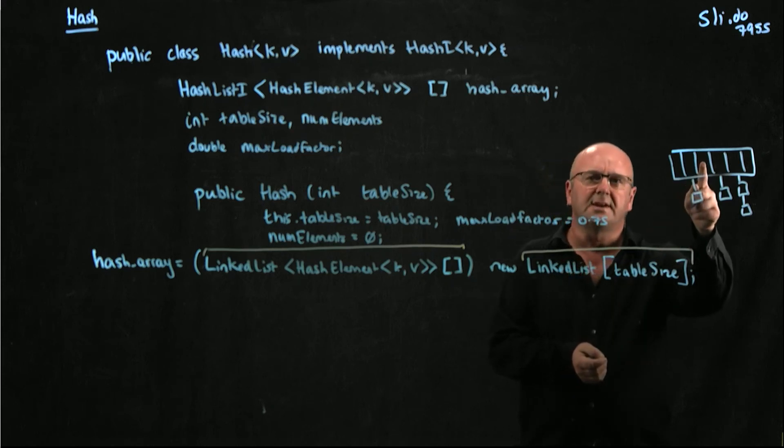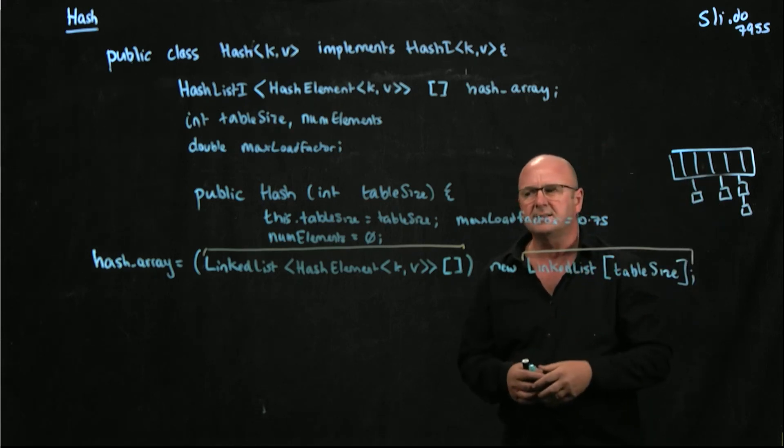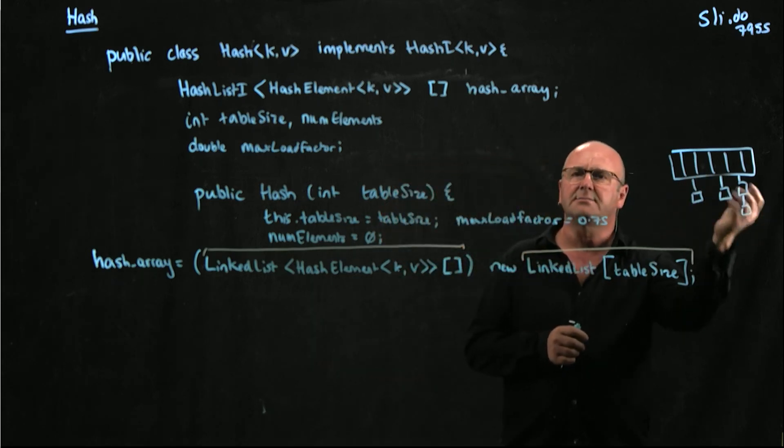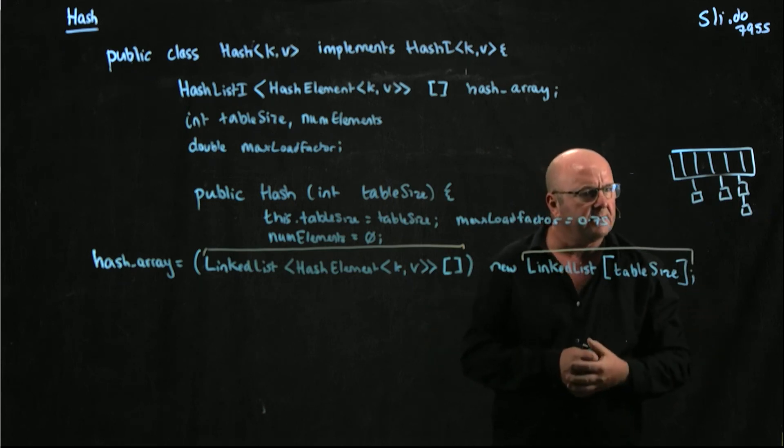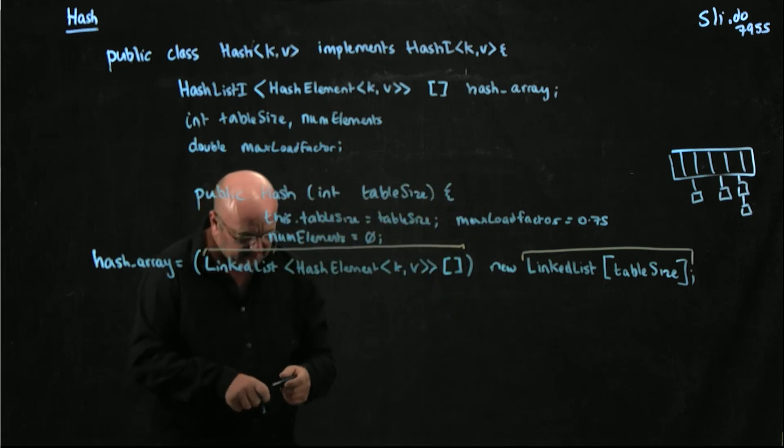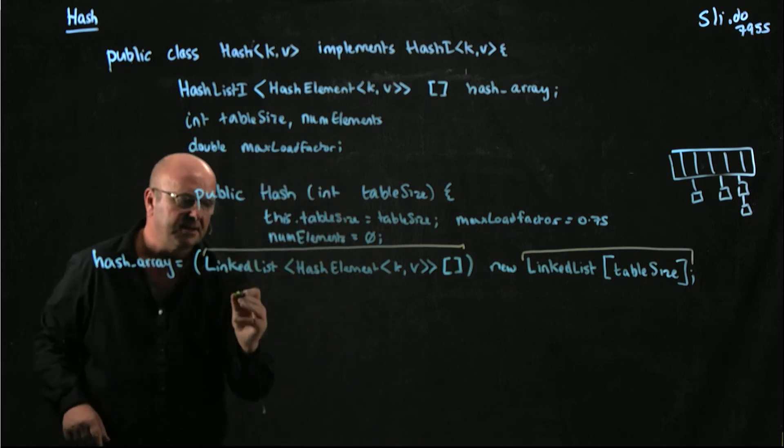So instead of doing it every time we add, remove, contains, find, all of those things, let's just do it right now at the constructor. And then our linked list will take care of returning null already, whether if there's nothing there. So we're just going to write a simple line that's going to initiate our linked list.